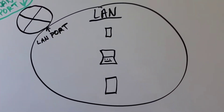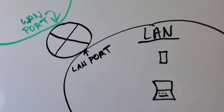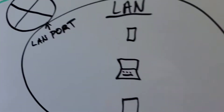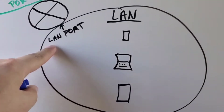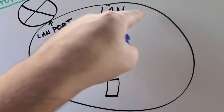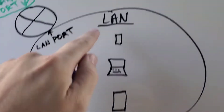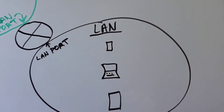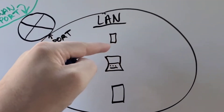This is a representation of your home network. The circle with the X represents your router. Everything on the LAN port and on the Wi-Fi are all included on your network. LAN means local area network — that's where your network is and all your devices.